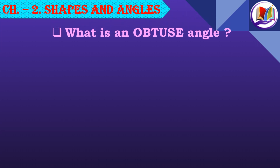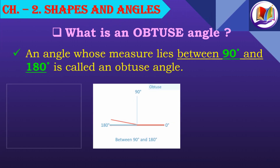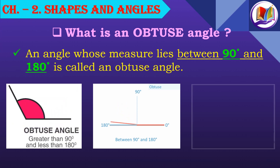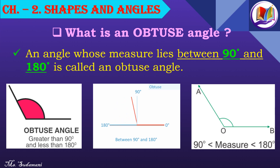What is an obtuse angle? An angle whose measure lies between 90 degrees and 180 degrees is called an obtuse angle. That is, it is more than 90 degrees and less than 180 degrees. This forms an obtuse angle.